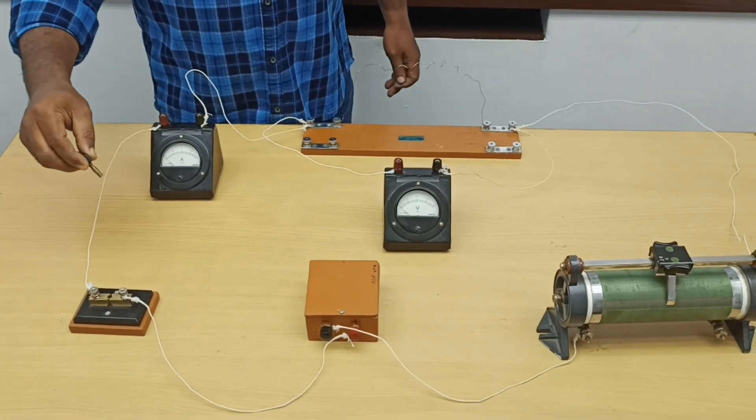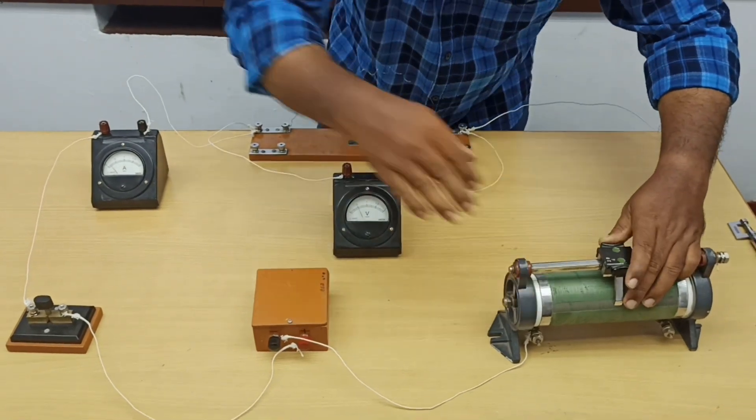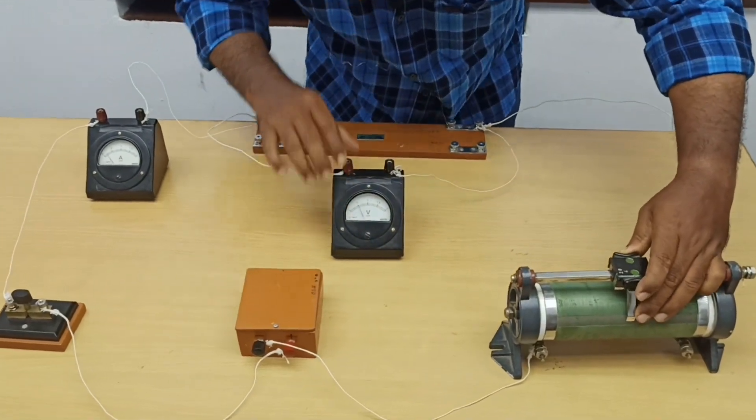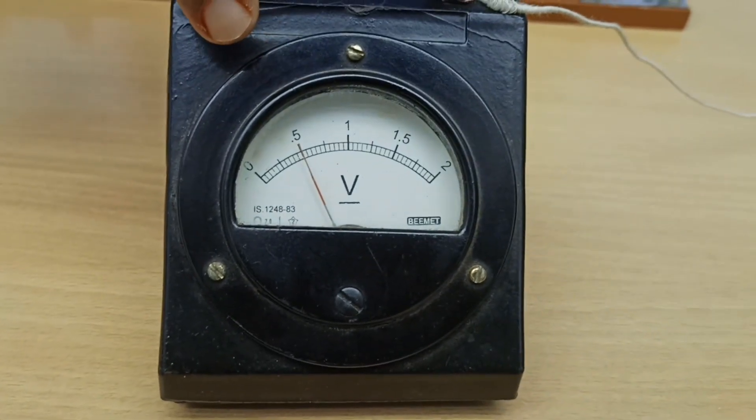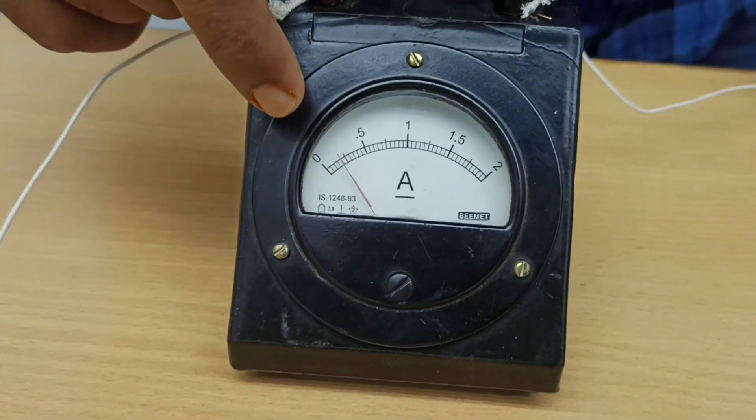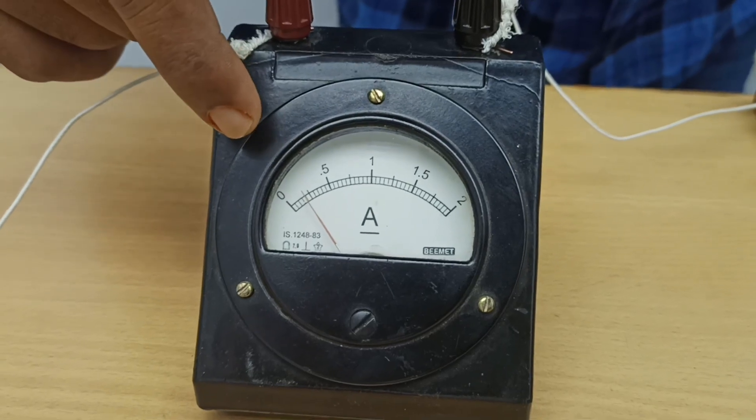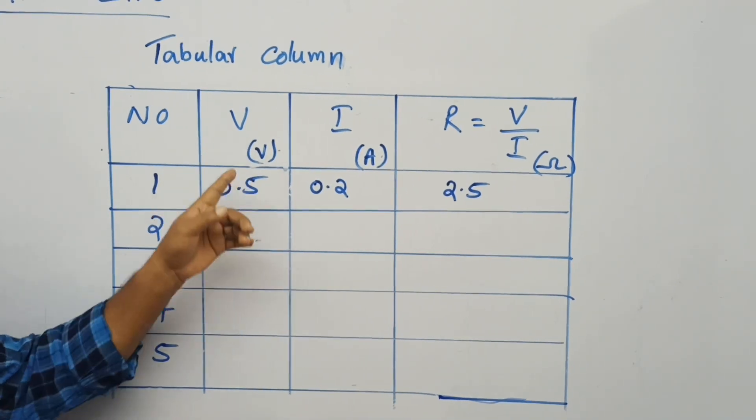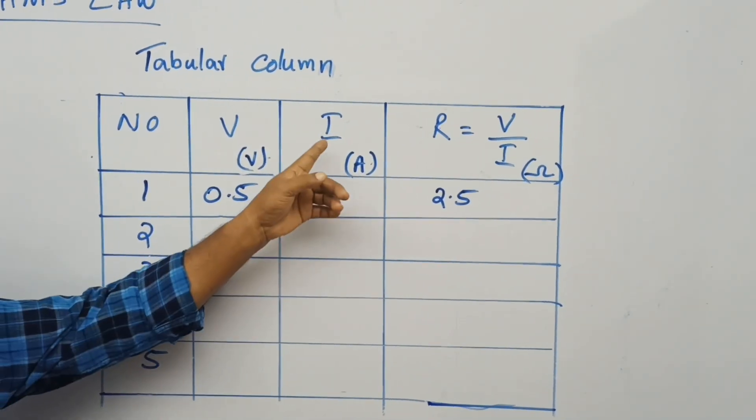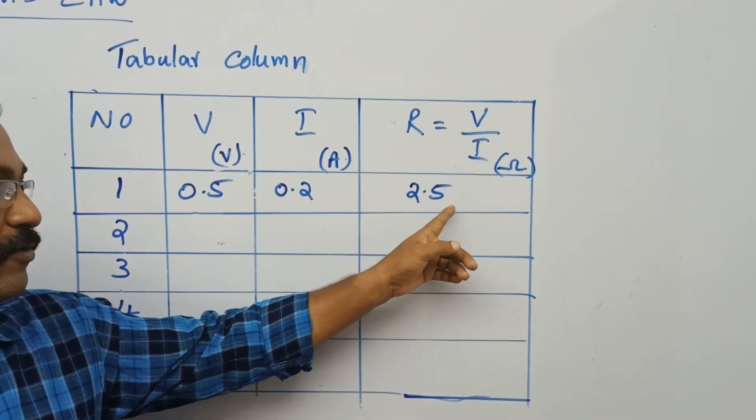Now I am going to take readings. I close the key and by adjusting the rheostat, I made the voltage 0.5 volt and the corresponding current I measured is 0.2 amperes. I have marked the values: voltage 0.5 volt, current 0.2 amperes, and I calculated the resistance 2.5 ohm.